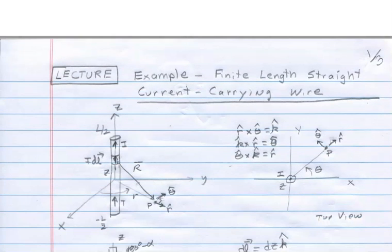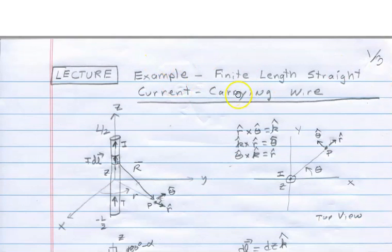What I want to do is look at this example of a finite length straight wire carrying a current I. I've got this finite length wire that's lined along the Z axis here, here's X, Y, and Z, and the current I is going up.